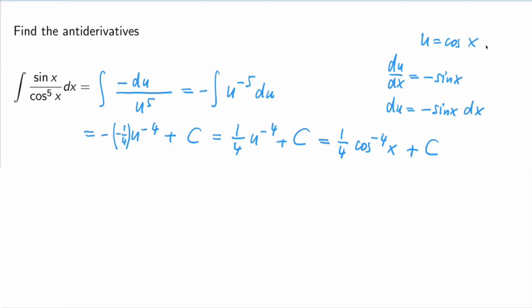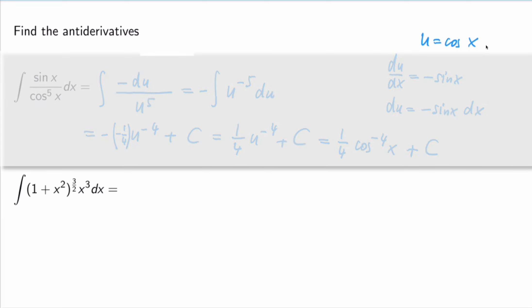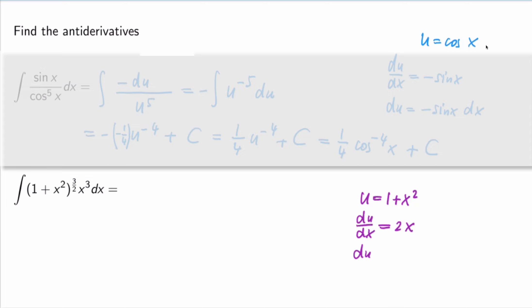The key is always finding the right substitution for u. Next example: ∫(1+x²)^(3/2)·x³ dx — this looks very complicated. I try u = 1+x², the inner expression. Then du/dx = 2x, so du = 2x dx. I also note that x² = u − 1, which I may need later.